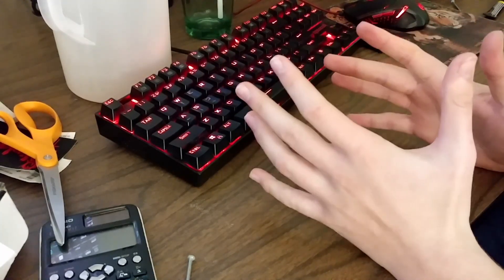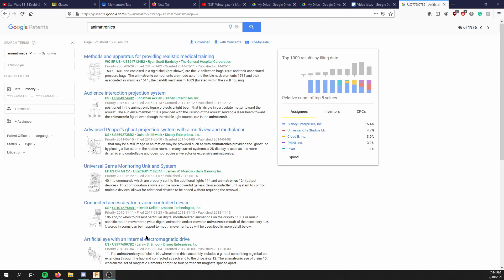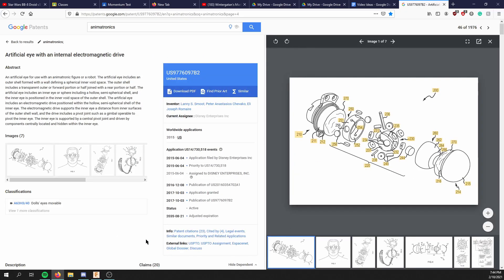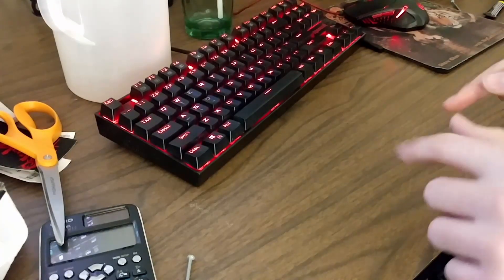So one day, I was performing one of my favorite activities, scrolling through old Disney patents. And I came across this one specifically, artificial eye with internal electromagnetic drive. Now after reading it for a second and looking at the pictures, I figured, wow, that looks really cool and super duper doable. So that's what we're going to make today in this video.